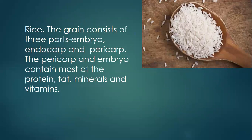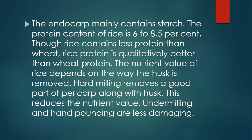Rice: The grain consists of three parts — embryo, endocarp, and pericarp. The pericarp and embryo contain most of the proteins, fats, minerals, and vitamins. The endocarp mainly contains starch. The protein content of rice is from 6 to 8.5%, so rice contains less protein than wheat. However, rice protein is qualitatively better than wheat protein. The nutrient value of rice depends on the way the husk is removed. Hard milling removes a good part of the pericarp along with the husk, which reduces the nutrient value. Under-milling and hand pounding are less damaging.